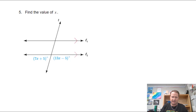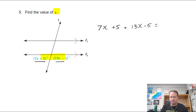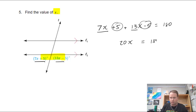Problem five: find the value of x. These two angles form a linear pair on the same straight line, so they add up to 180 degrees. The equation is (7x + 5) + (13x − 5) = 180. Combining like terms: 20x plus 0 equals 180. Dividing both sides by 20, x equals 9.